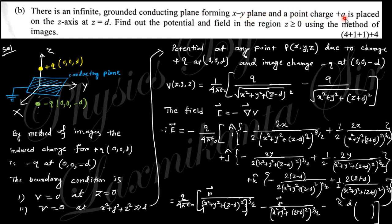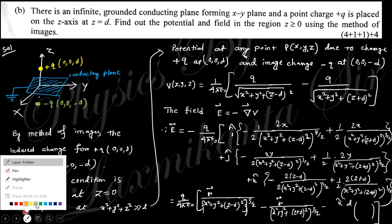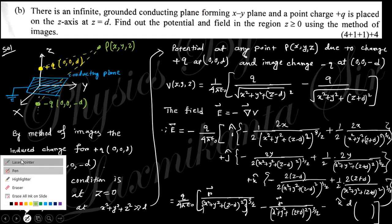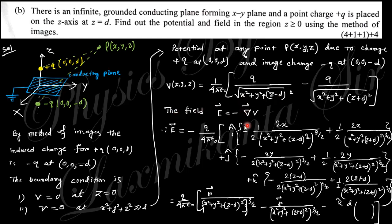This is solved using the method of images. The conducting plate acts like a mirror — since the charge +Q is at z = d, an image charge of −Q is placed at z = −d. The boundary conditions are: potential equals zero at z = 0, and potential equals zero at very large distance. At any point P with coordinates (x, y, z), the potential is the sum of contributions from +Q and the image −Q, and the electric field is E equals minus grad V.